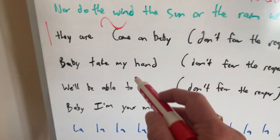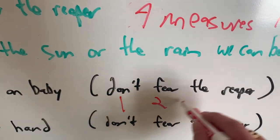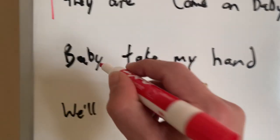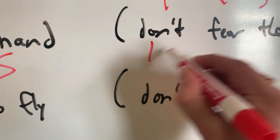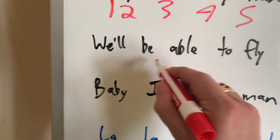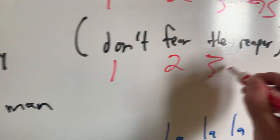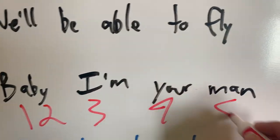Then we get into the chorus. Come on, baby. Don't fear the reaper. Baby, take my hand. Don't fear the reaper. We'll be able to fly. Don't fear the reaper. Baby, I'm your man.